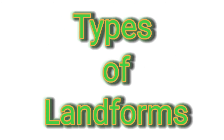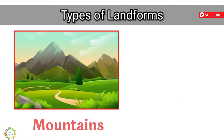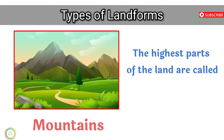Types of Landforms. Mountains: the highest parts of the land are called mountains.